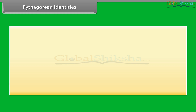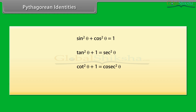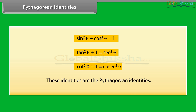Pythagorean Identities: Have a look at these identities. Sin square theta plus cos square theta is equal to 1. Tan square theta plus 1 is equal to sec square theta. Cot square theta plus 1 is equal to cosec square theta. These identities are the Pythagorean identities.